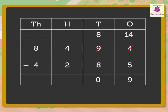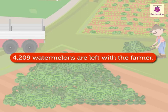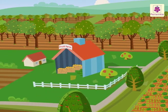Next, subtract the hundreds. That is, four minus two is equal to two. Lastly, subtract the thousands. That is, eight minus four is equal to four. Thus, eight thousand four hundred ninety-four minus four thousand two hundred eighty-five is equal to four thousand two hundred nine. Hence, we conclude that four thousand two hundred nine watermelons are left with the farmer. It was so much fun learning at the fruit farm.